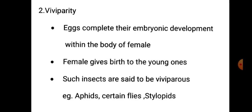Second type is viviparity. In this type, eggs complete their embryonic development within the body of the female. The female gives birth to young ones. Such insects are said to be viviparous. Examples: aphids, certain flies, and stylopids.